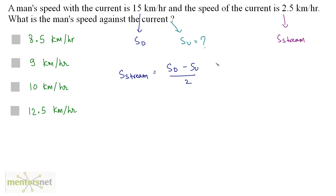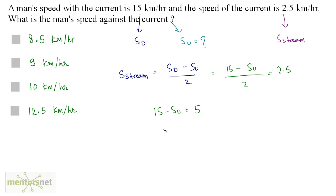That is equal to 15 minus SU, divided by 2, which equals S-stream, and S-stream is 2.5. So we have 15 minus SU equals 2.5 times 2, that's 5. Therefore the upstream speed is 15 minus 5, that's 10 kilometers per hour. So the correct answer is option C.